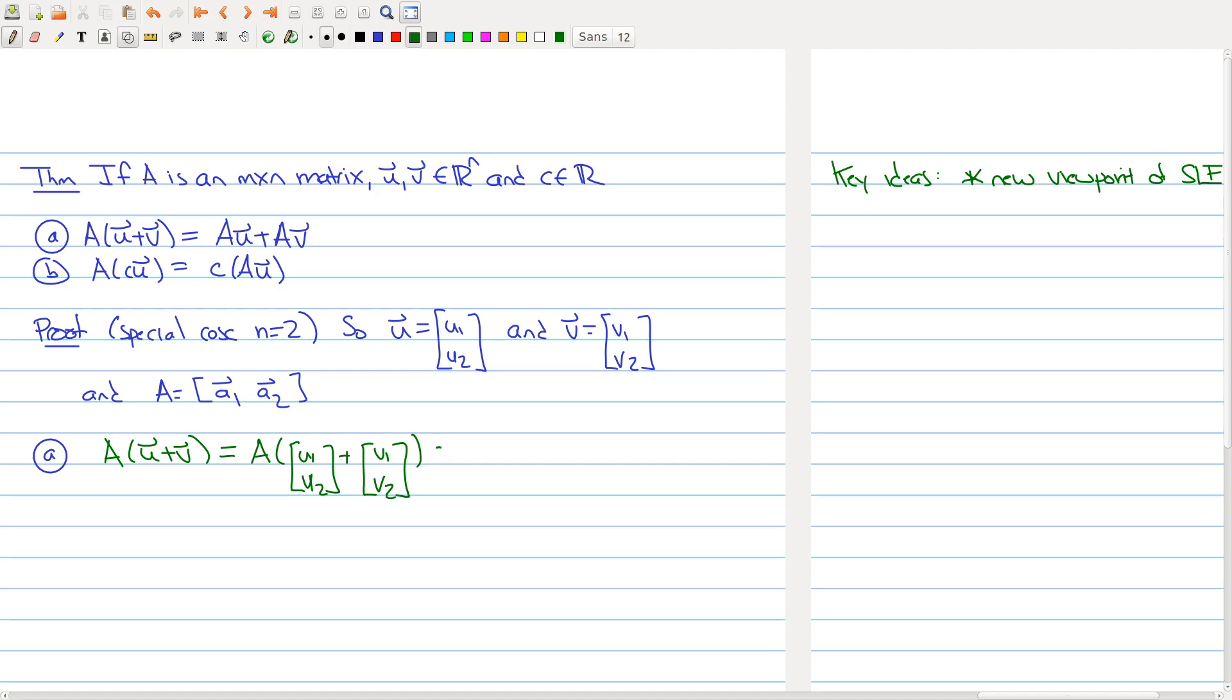Now, I know how to add two vectors together, so the stuff inside of the quantity just reduces to u1 plus v1, u2 plus v2. Now, remember my matrix A has two columns, so this is equal to u1 plus v1 times the first column, plus u2 plus v2 times the second column.